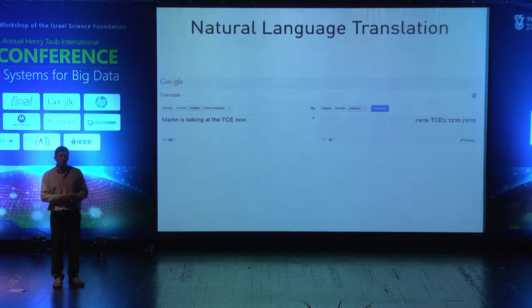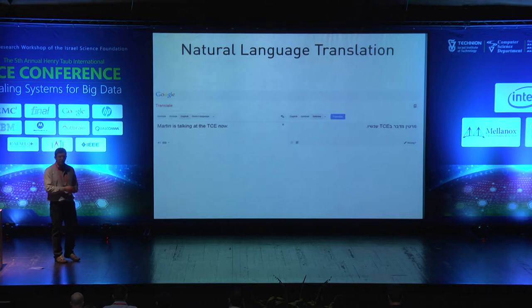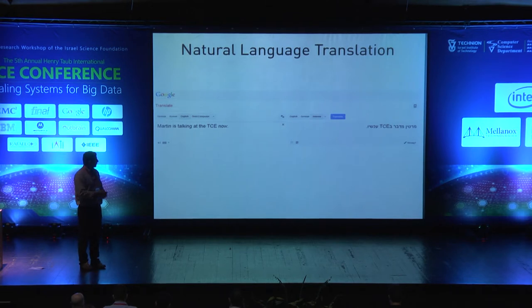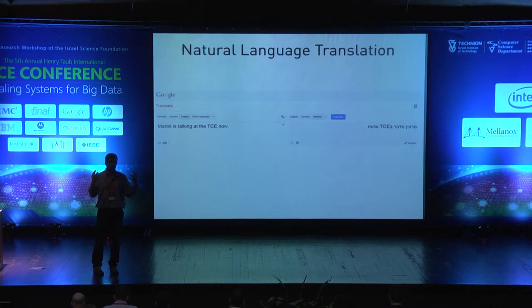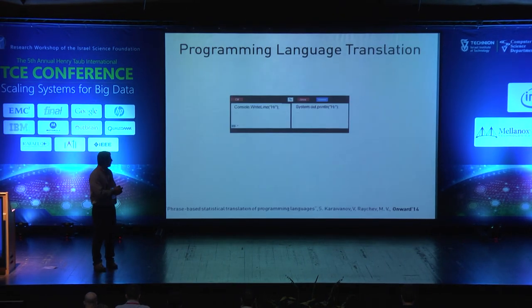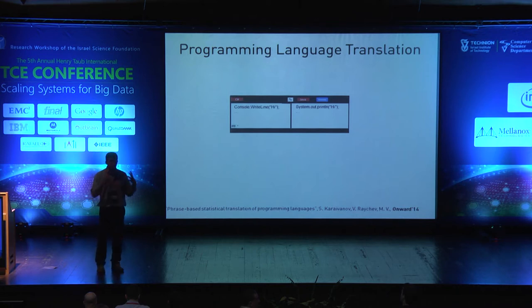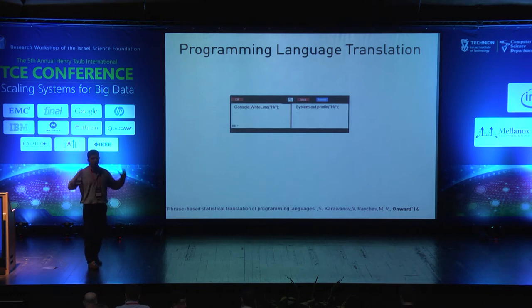Here is another example from the field of natural language translation — Google Translate, which many people have used. This says on the left that Martin is talking in the TC, and when you click Translate it produces something in Hebrew. Statistical systems like Google Translate are based on probabilistic models of a parallel corpus of lots of translations — they give you likely translations to an existing sentence. There is a similar corresponding problem for programs: you put a program in one programming language and can actually translate it into another programming language or a different environment. We have built such a system based on statistical probabilistic models of the big code available out there.